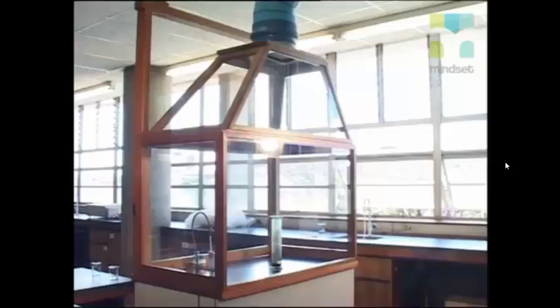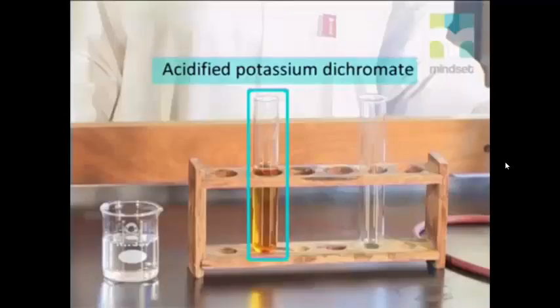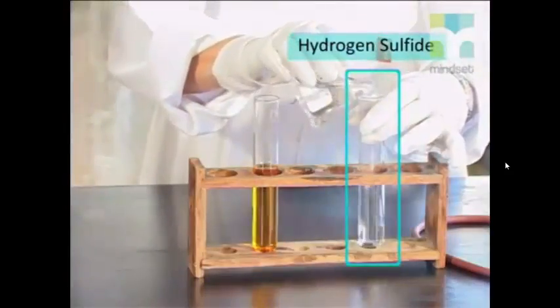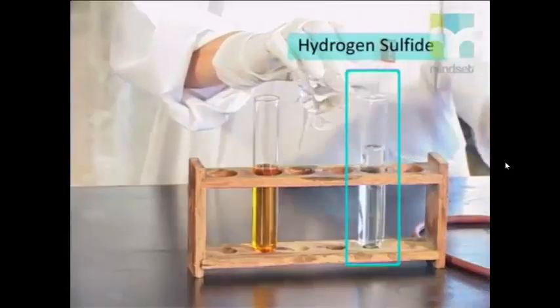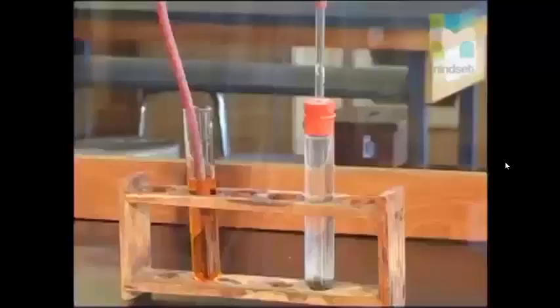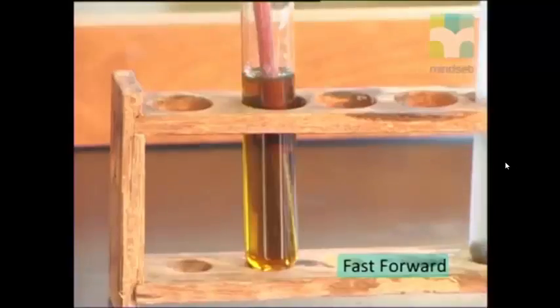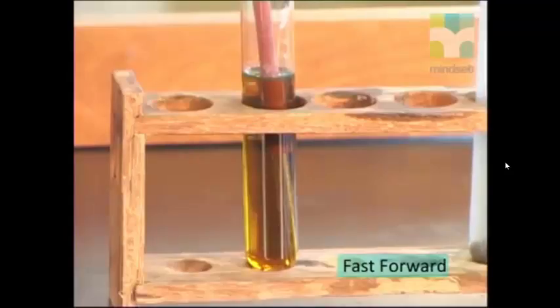Please note that this experiment must be carried out in a fume cupboard. Hydrogen sulfide has a horrible rotten egg smell and is also very toxic. Note the acidified potassium dichromate color. It's orange. Acidified means that we have added some acid to the potassium dichromate. We now add the hydrogen sulfide to the acidified potassium dichromate. Can you see any changes? We see that the orange color has turned greenish brown.